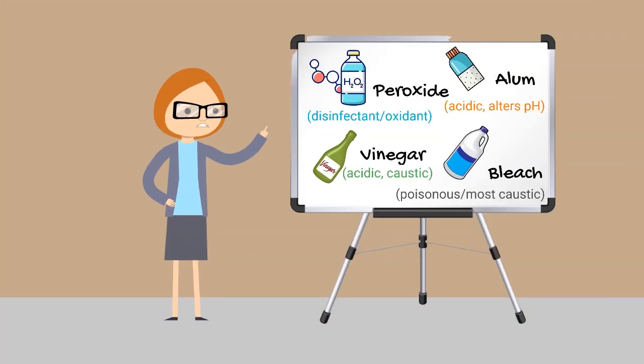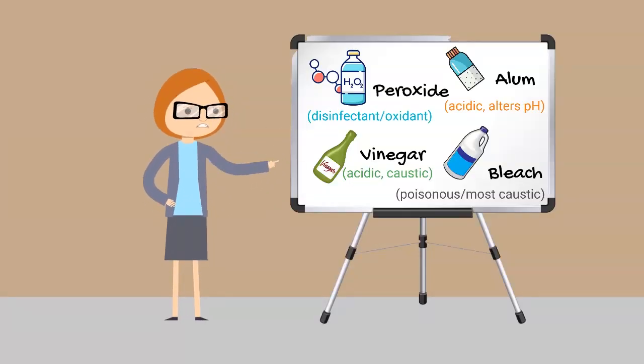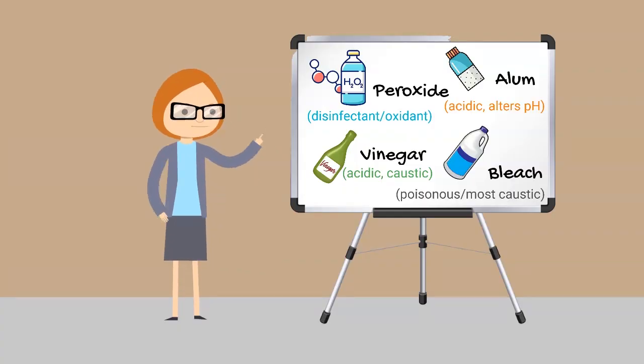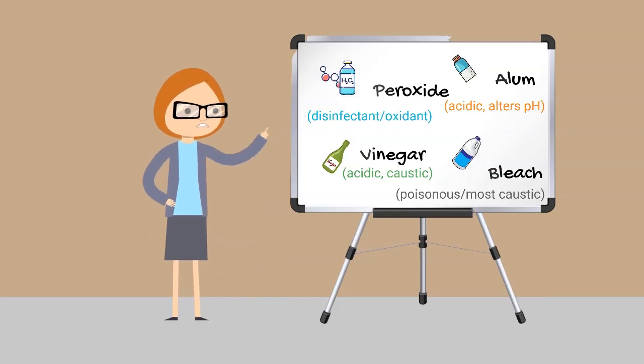For example, peroxide is a disinfectant and an oxidant, so it's toxic and caustic. Alum and vinegar are extremely acidic, can alter the pH, and are caustic. And chlorine bleach is the most poisonous and caustic of all.